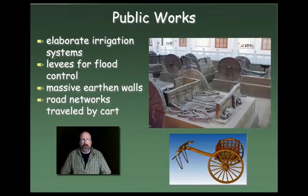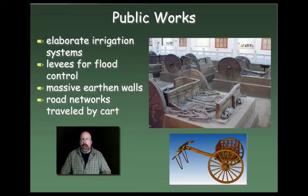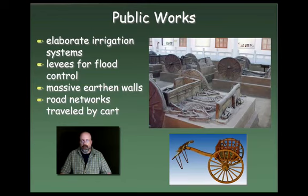In terms of public works, they had elaborate irrigation systems. In particular, they built levees for flood control. The idea was that if you built dikes, levees, and barriers along the rivers, you could prevent flooding and control agricultural production by irrigating the surrounding countryside. This did cause some problems, especially along the Yellow River, where the riverbed is actually higher than the surrounding countryside over time.